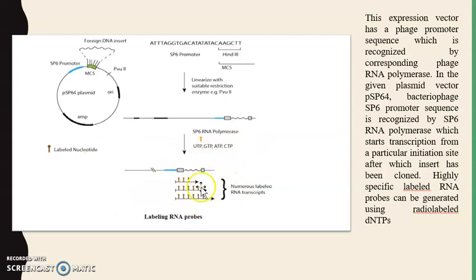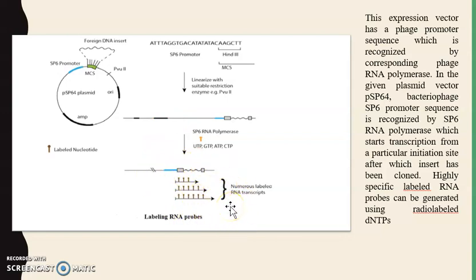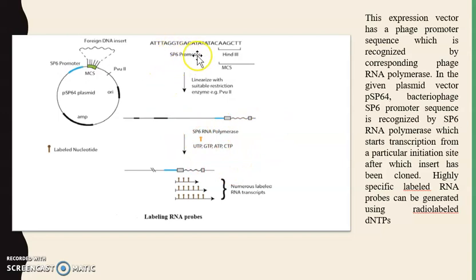With the help of this expression vector, which has a phage promoter sequence recognized by the corresponding phage RNA polymerase, the SP6 promoter is recognized by SP6 RNA polymerase. Labeling is done, and with the pSP64 plasmid vector the bacteriophage SP6 promoter sequence is recognized by SP6 RNA polymerase, which initiates transcription from a particular initiation site. Highly labeled specific RNA probes can be generated using either new radiolabeled dNTPs or non-radioactive labeling methods.